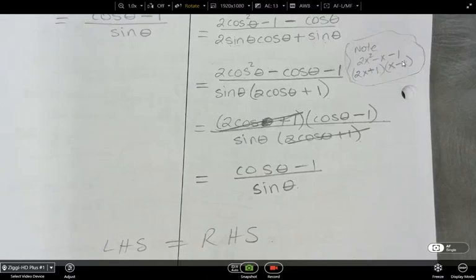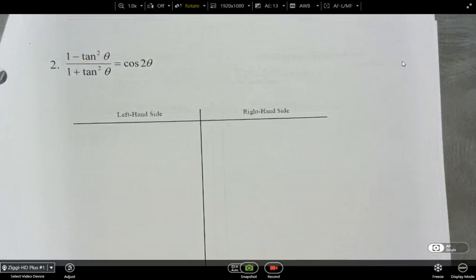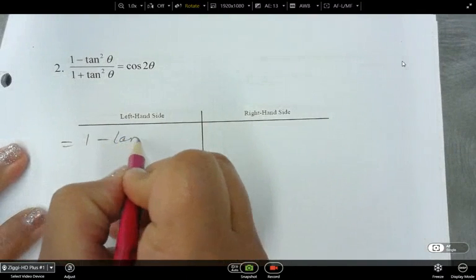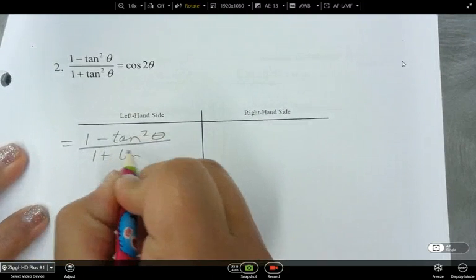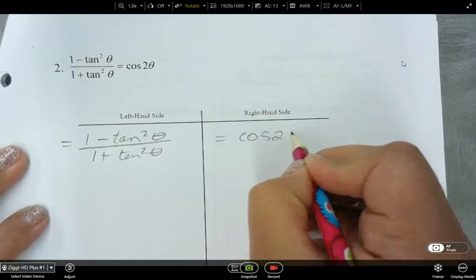All right. So now let's go to the next one. And this one says 1 minus tan squared theta over 1 plus tan squared theta. All over 1 plus tan squared theta. That's the left-hand side. And then the right-hand side is cos 2 theta. Write that out. And here's your right-hand side.